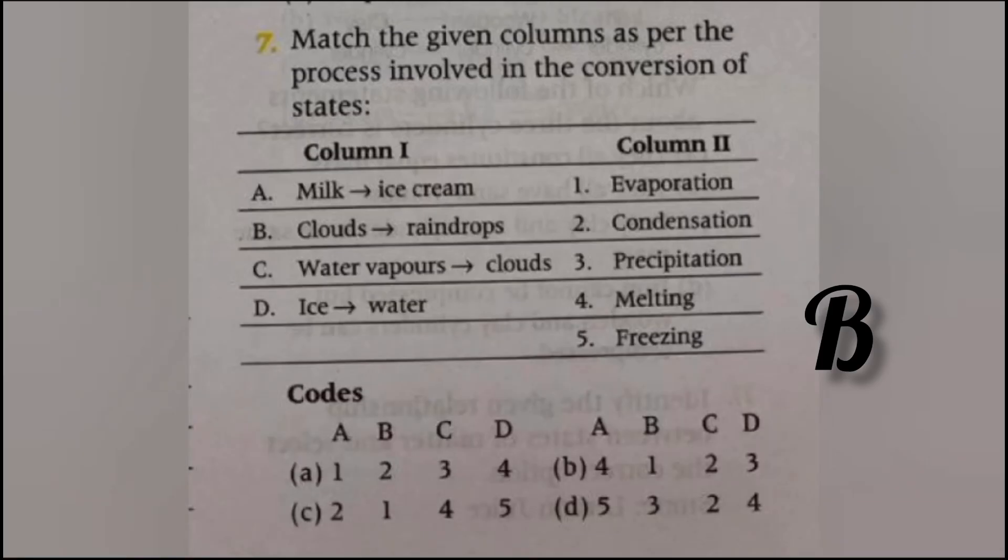Match the given column as per the process involved in the conversion of the state. The answer is D: water into water vapors is boiling, water vapors into cloud is condensation, ice into water is melting.